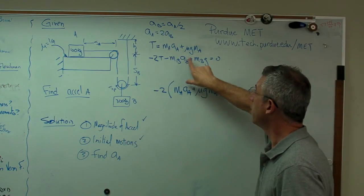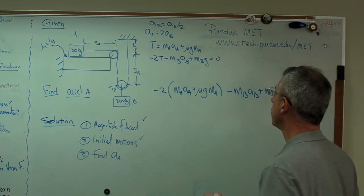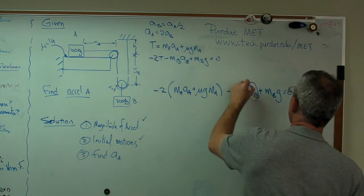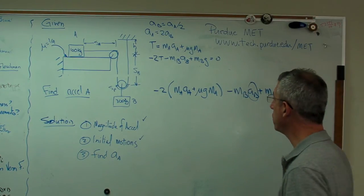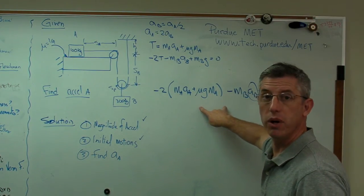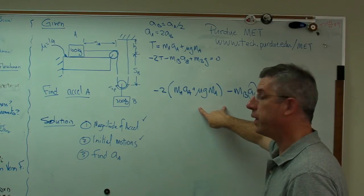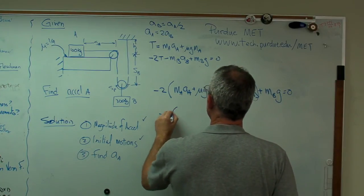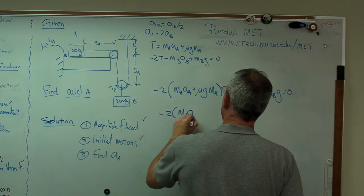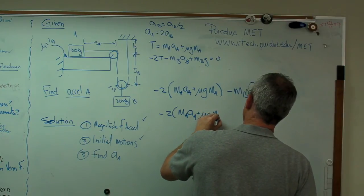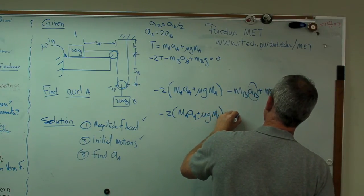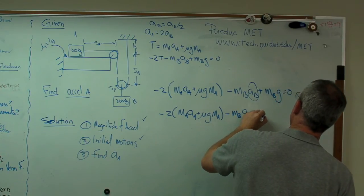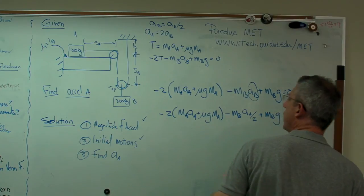So anywhere I see AB, I'm going to put AA over 2. Right there, I'm going to replace AB with AA over 2. And the last thing I'll have is one equation that contains, well, the only unknown is AA. Solve for AA and I'll be good to go. So minus 2 MA AA plus mu G MA minus MB AA over 2, MB G equals zero.